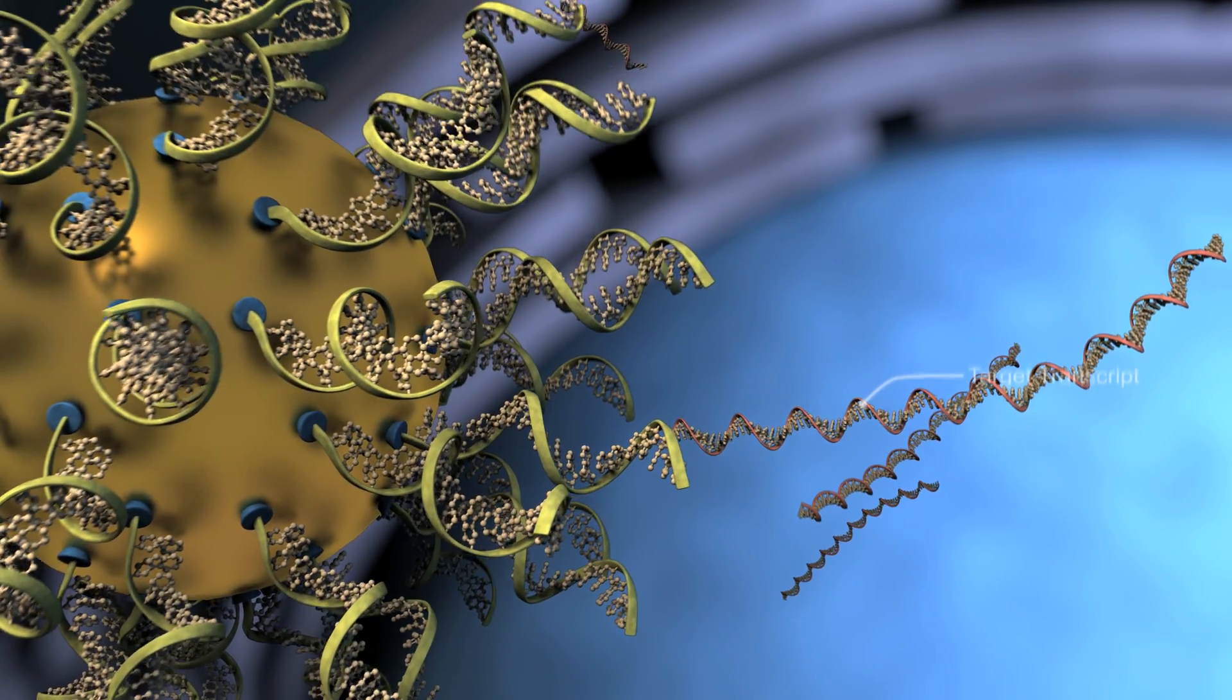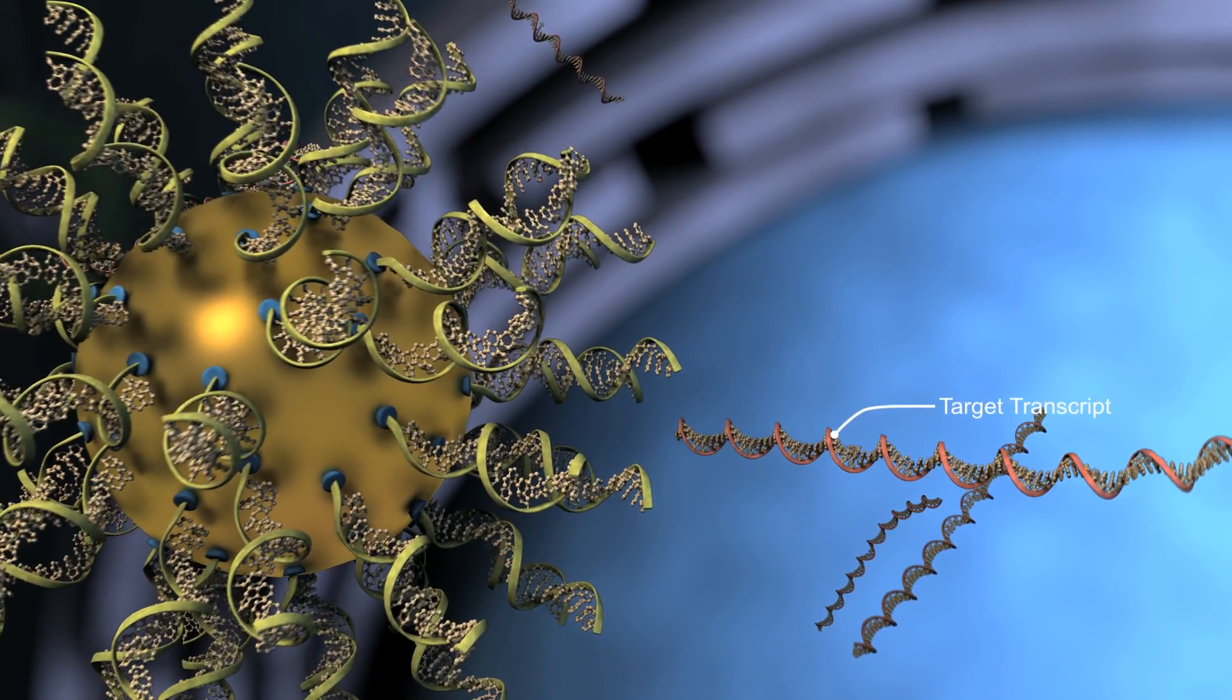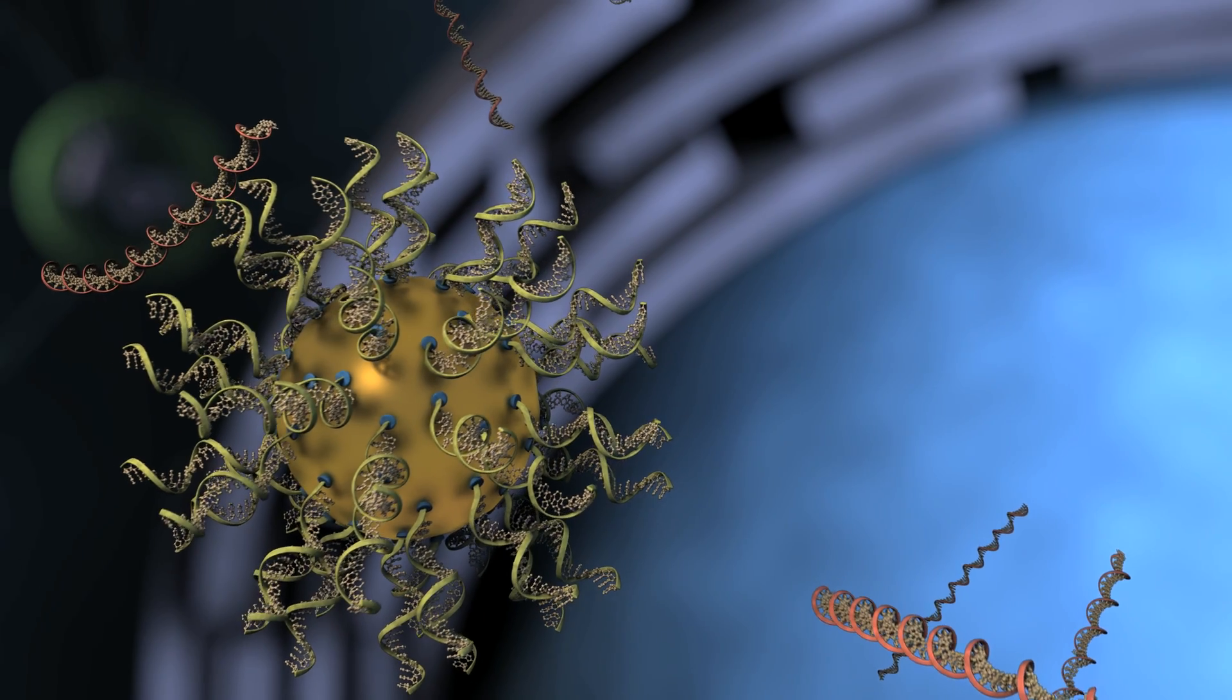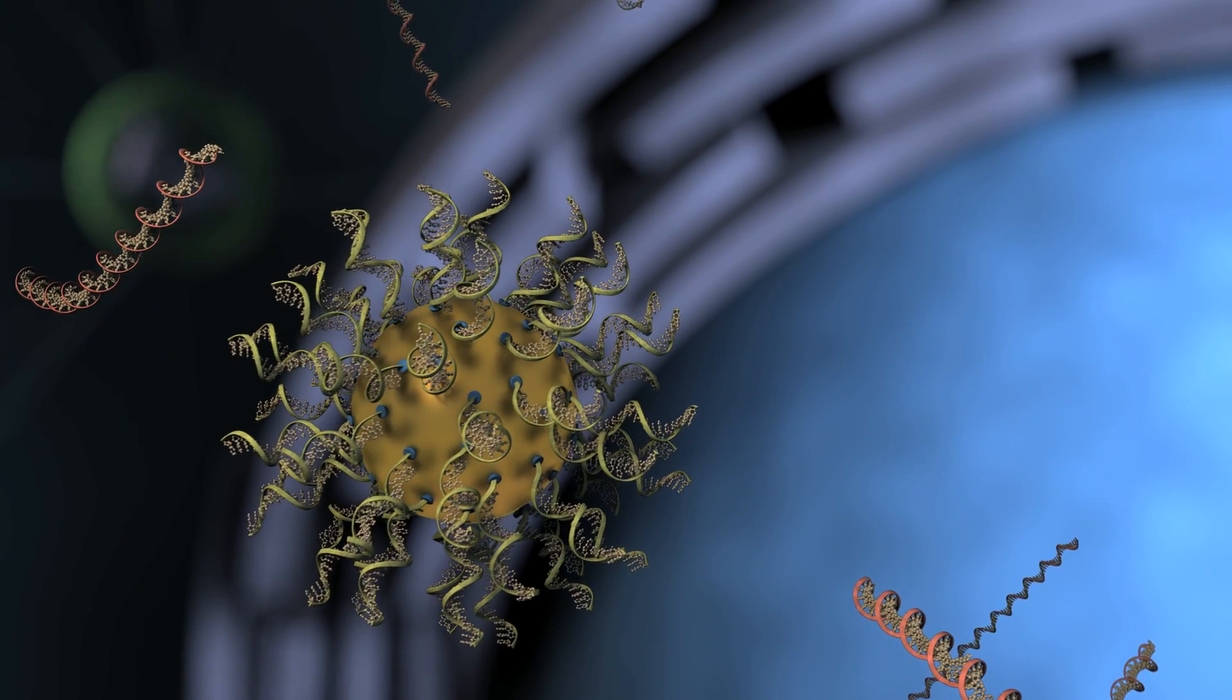Once the nucleic acids reach the target transcript, both linear and spherical nucleic acids can utilize either the antisense or RNAi pathways to regulate gene expression.